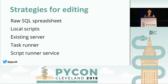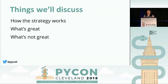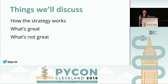Today we're going to go through five different strategies: maintaining a raw SQL spreadsheet, running scripts locally, running scripts on an existing server, using a task runner, and building out a fully flagged script runner service. We'll walk through the strategies in order of the amount of effort required to get each one up and running, and we'll also talk about the benefits you'll receive in return. The examples involve a Python stack and a SQL database, but they can work in any stack of your choice.